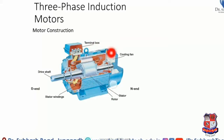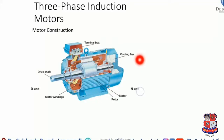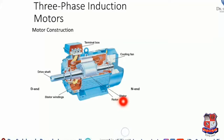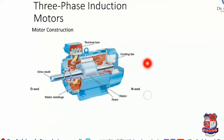The terminal box contains the winding connections. The cooling fan is used for motor ventilation. The stator end shield and ventilation end are structural parts of the motor.